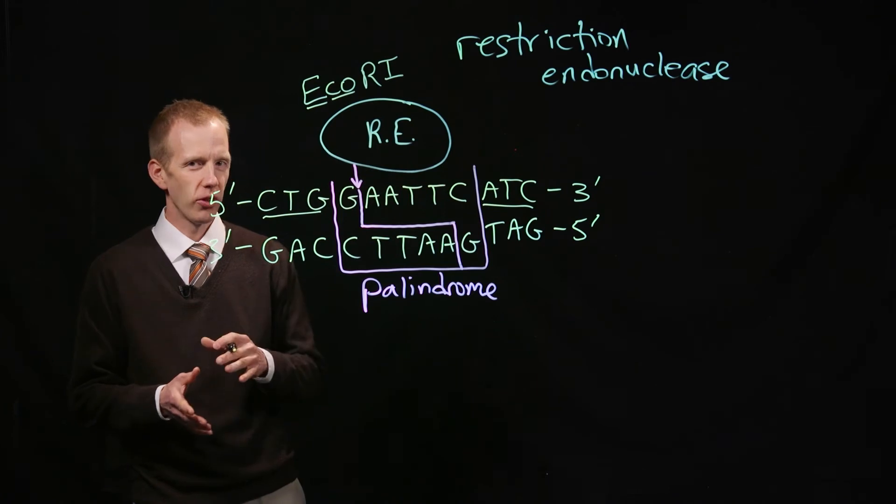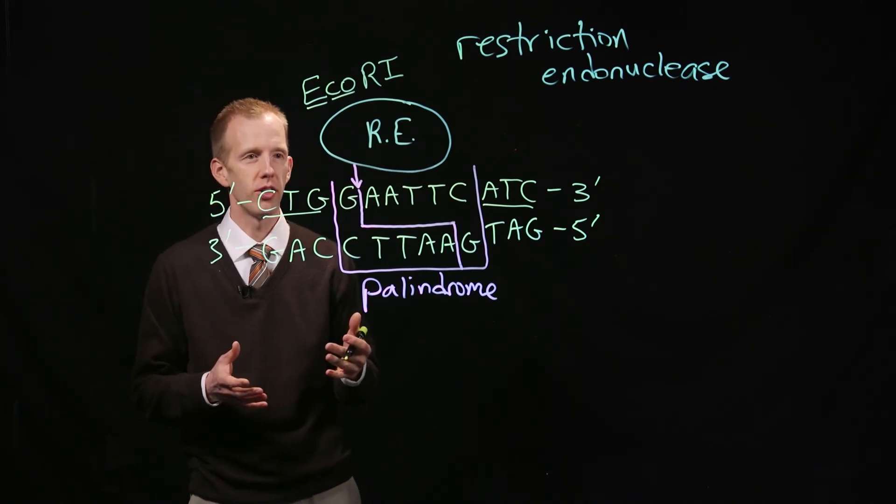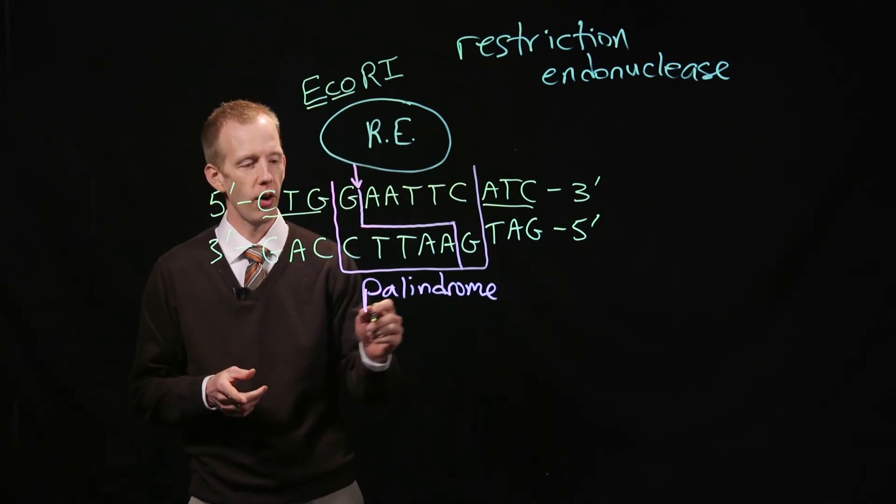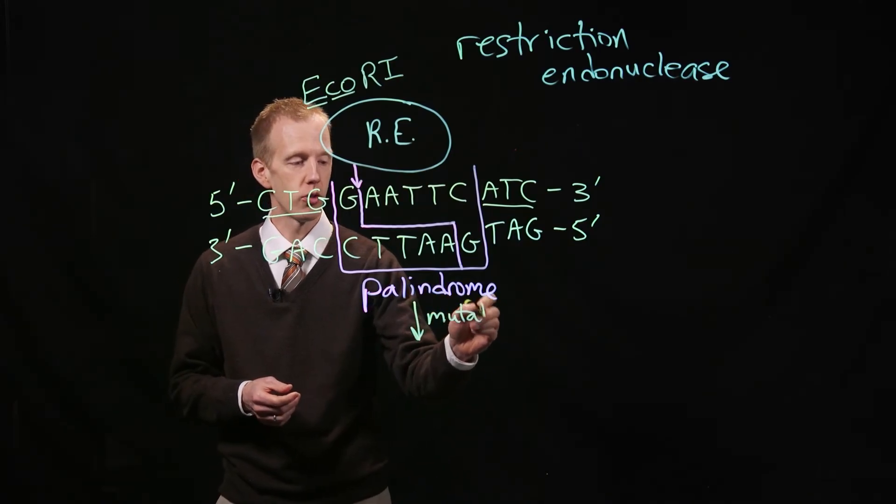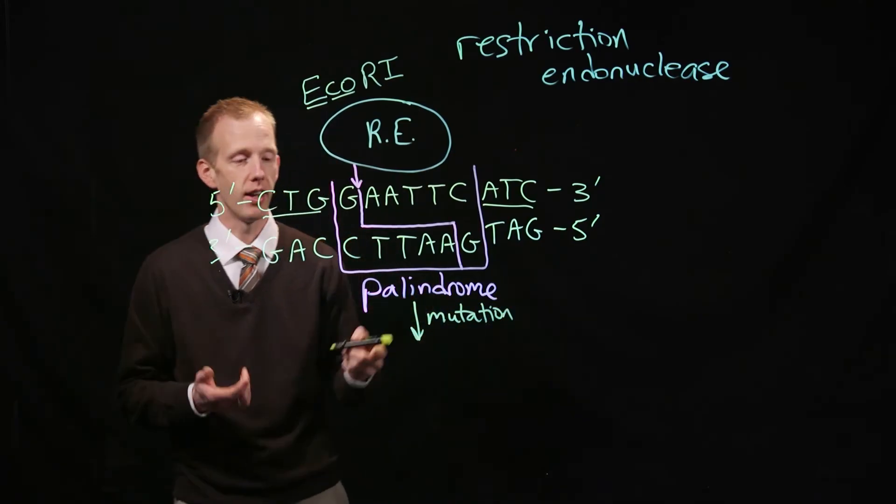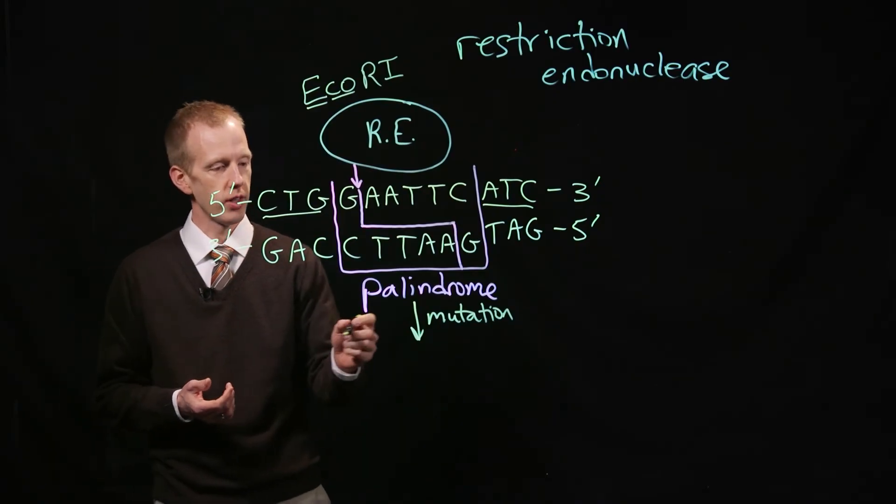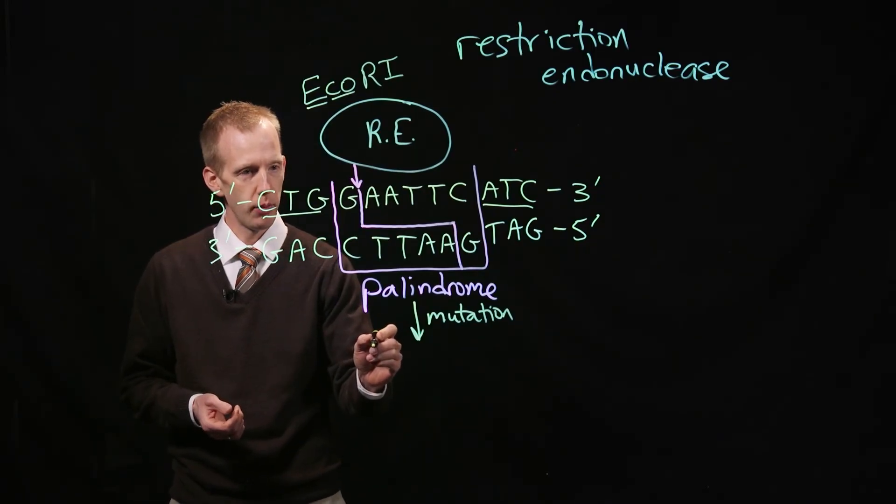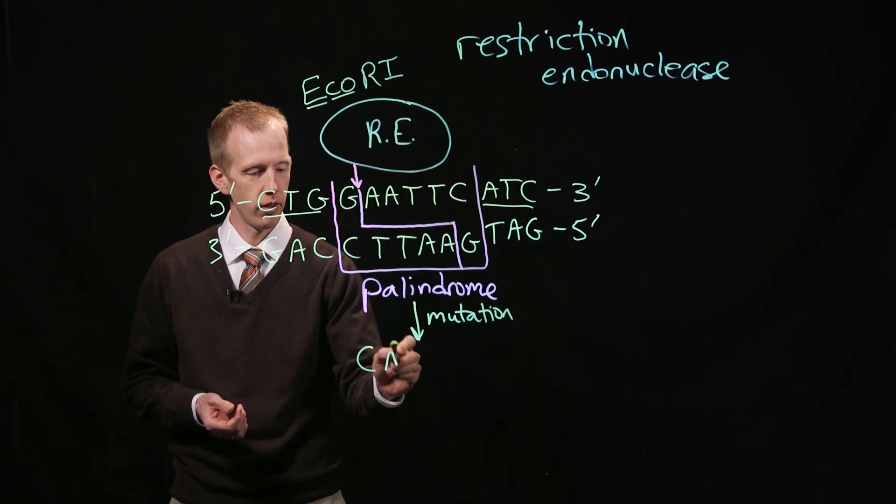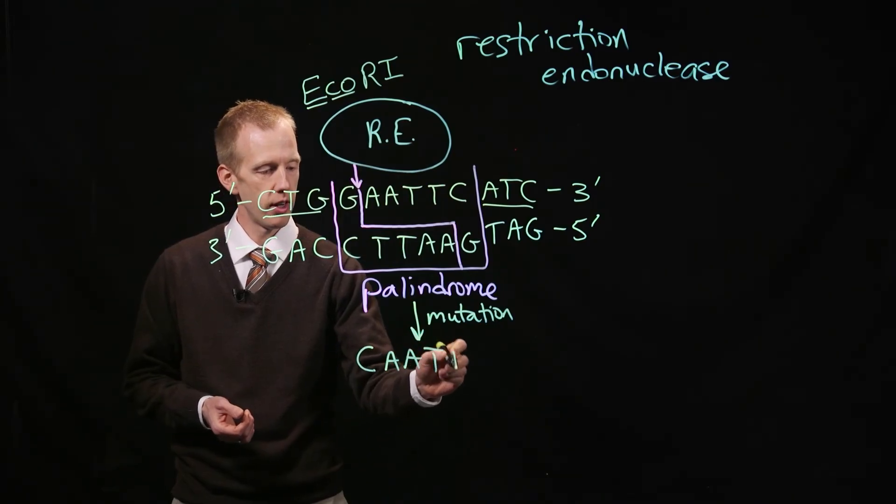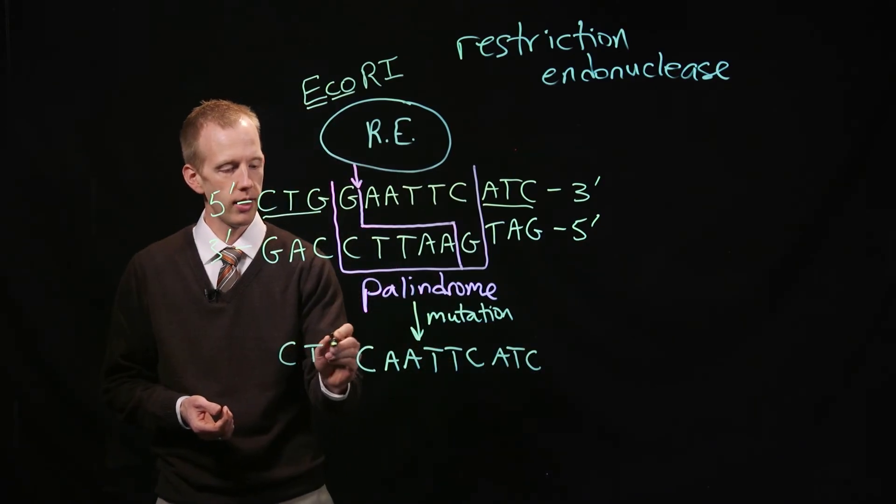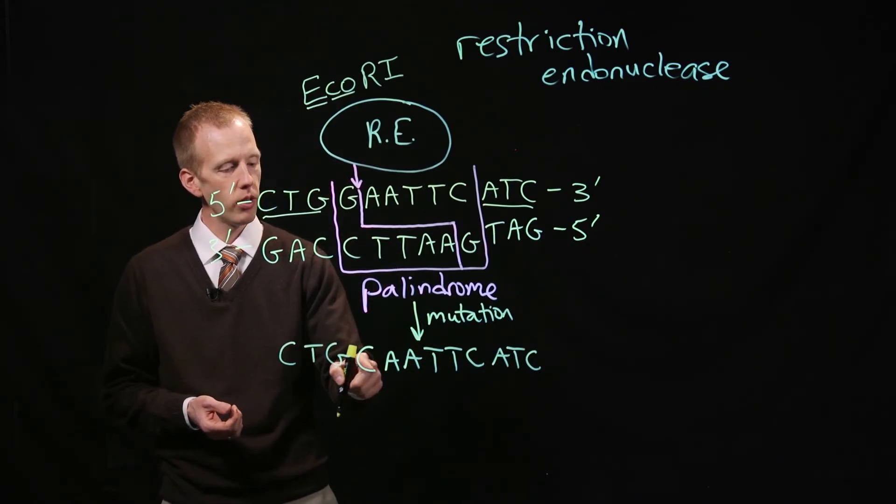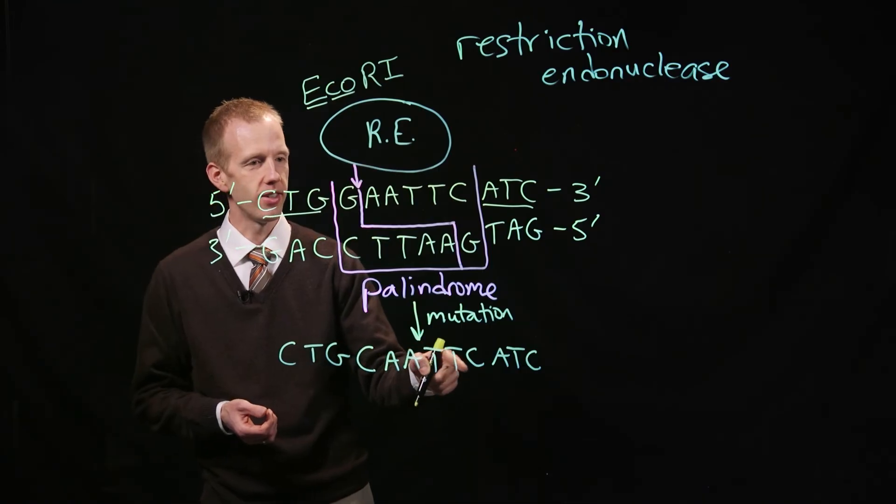Having discussed single nucleotide polymorphisms and mutations, it's interesting to consider how a mutation might impact the ability of a restriction enzyme to recognize and cut a DNA sequence. For example, if there was a single nucleotide polymorphism here, such that the sequence of a chromosome looked like this, now we no longer have G-A-A-T-T-C.